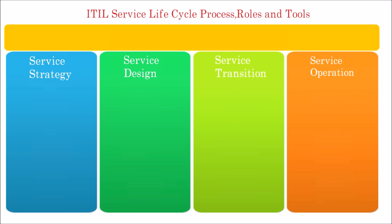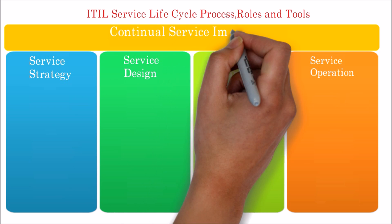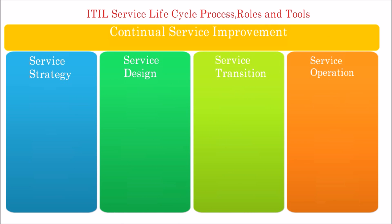The fifth stage is Continual Service Improvement. It provides guidance on measuring service performance through the service lifecycle, suggesting improvements in service quality, operational efficiency, and business continuity. Now we will see the processes, people, and tools in each service lifecycle stage in detail.